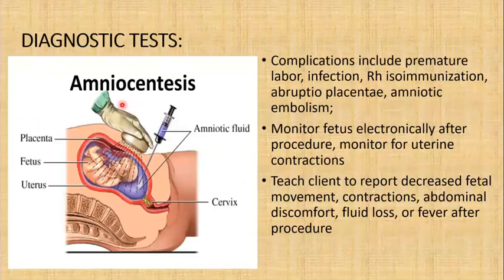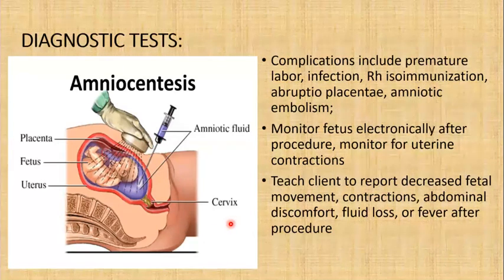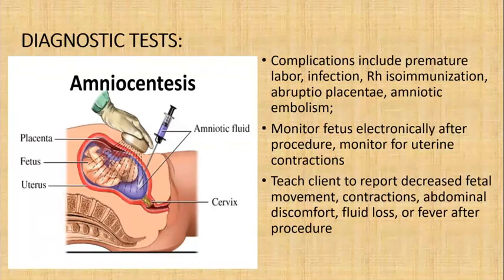The next test is amniocentesis. Amniotic fluid is aspirated by a needle inserted through the abdominal and uterine wall. This is done at 16 weeks to detect genetic disorders, or possibly after 14 weeks gestation. When done at 30 weeks, it assesses the lecithin-sphingomyelin ratio, which helps determine lung maturity. Prior to this procedure, the client's bladder should be emptied if greater than 20 weeks gestation. Ultrasonography is used to avoid trauma from the needle to the placenta and the fetus. Test results take up to two to four weeks.